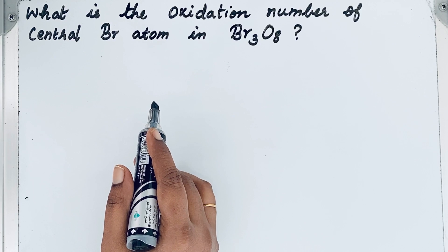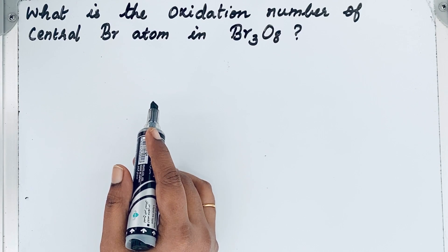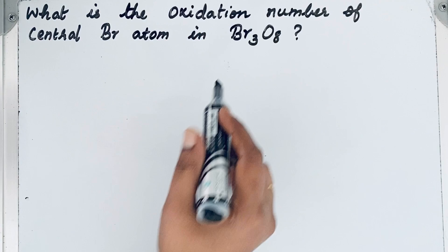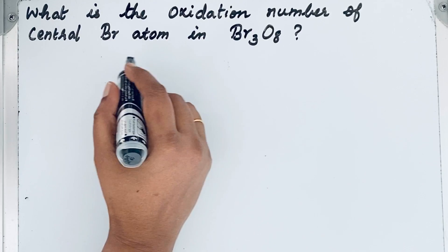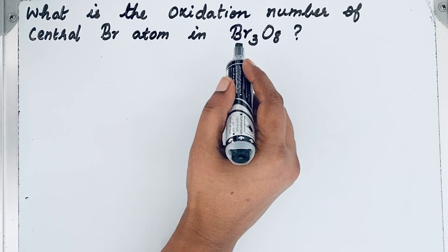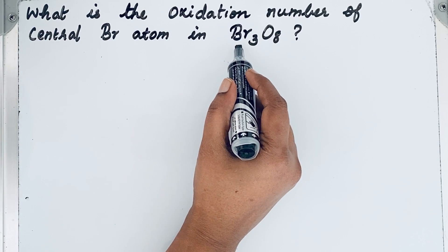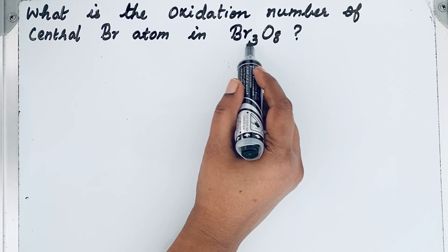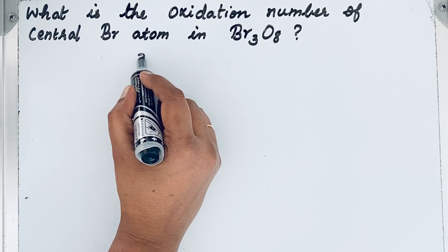To find the oxidation number, certain rules must be followed. According to the rules, if it is a neutral compound, the sum of oxidation numbers of all the atoms in the compound must be zero. Here Br₃O₈ is a neutral compound, and we want to find the oxidation number of bromine. There are three bromine atoms, so let us call that x.